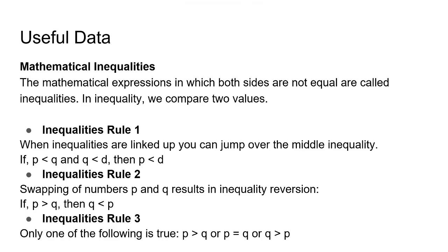The mathematical expressions in which both sides are not equal are called inequalities. Inequality rule 1 is when inequalities are linked up, you can jump over the middle inequality. For example, if P is less than Q and Q is less than D, then we can say that P is also less than D.